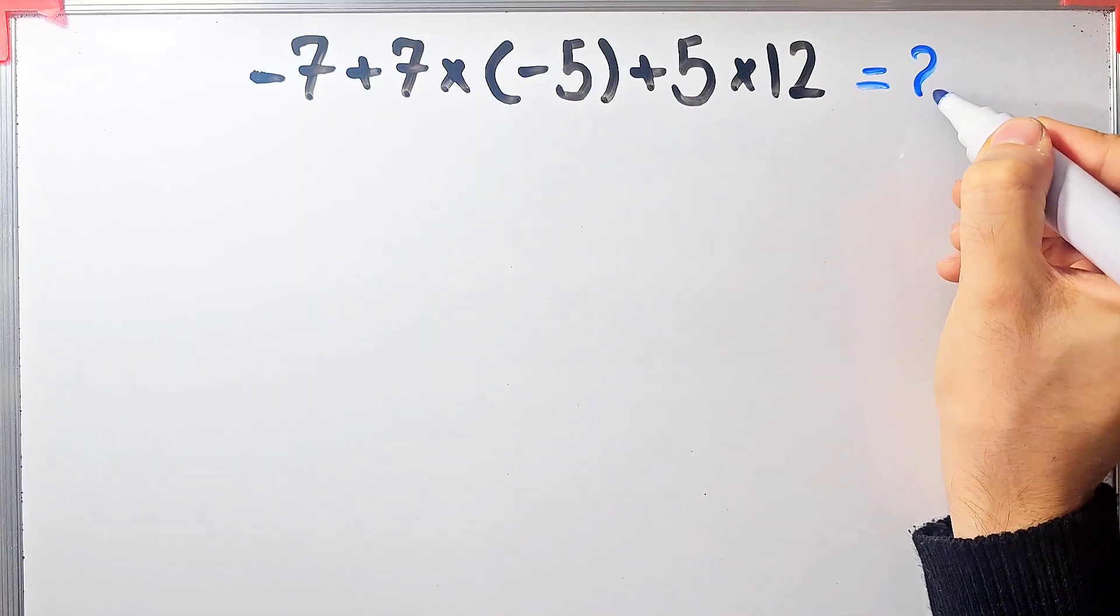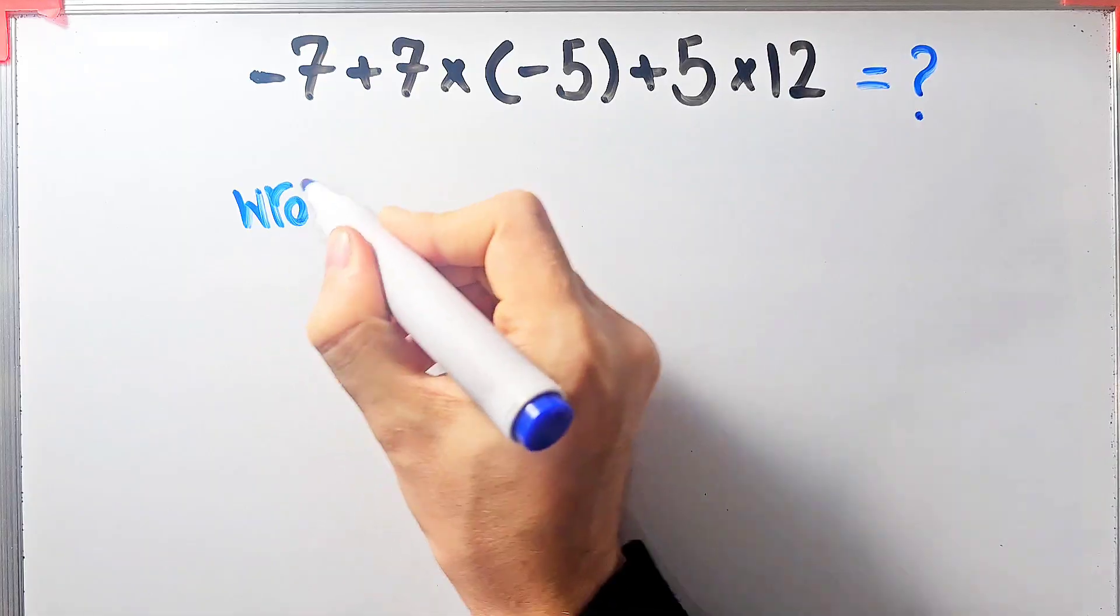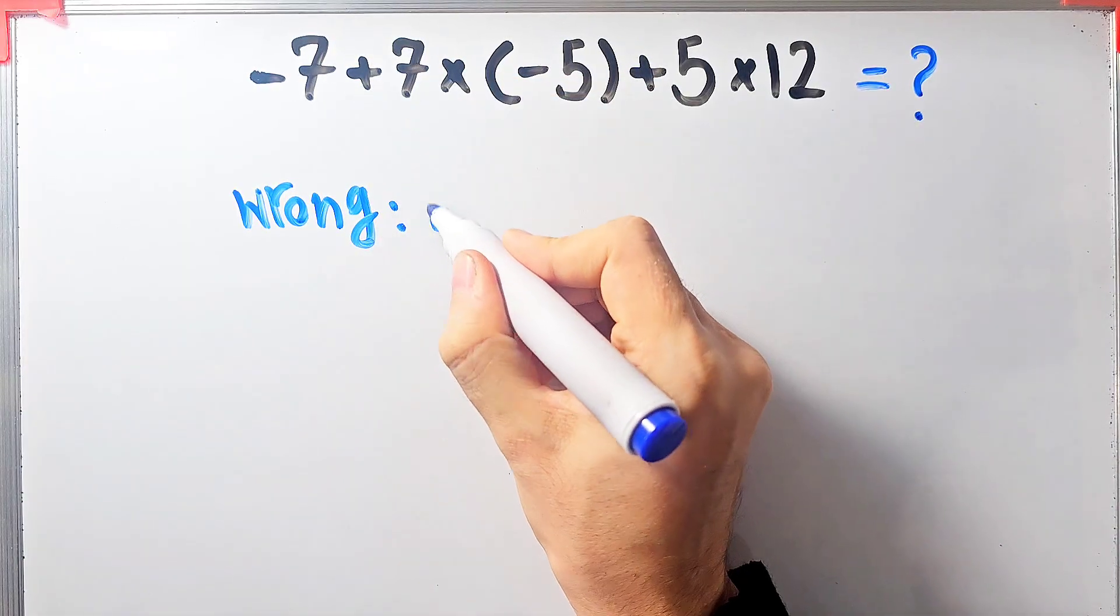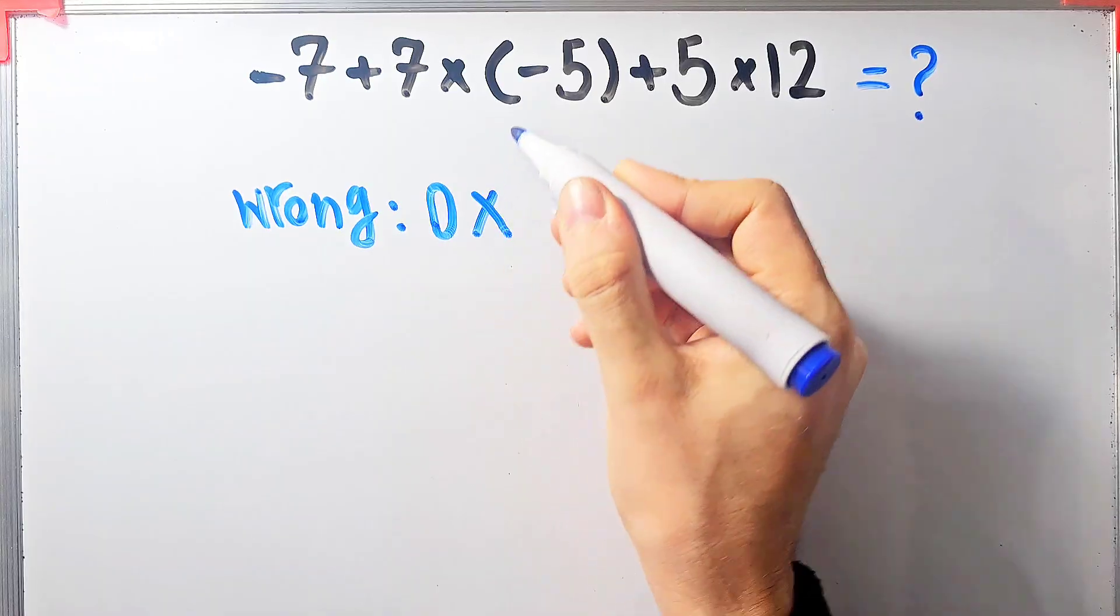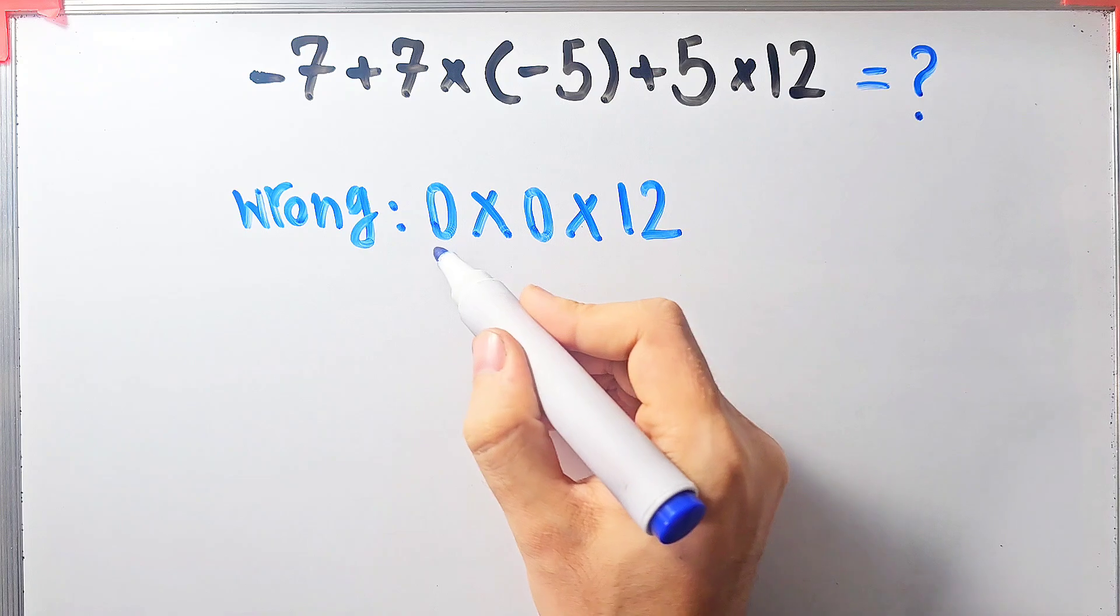What is the value of this expression? Can you solve it? Some people solve this question like this: they say negative seven plus seven equals zero, zero times negative five plus five which equals zero, then times twelve.